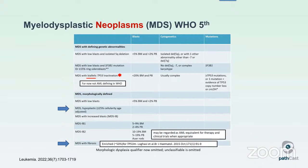I'll start with myelodysplastic syndrome, previously known as myelodysplastic syndrome, now referred to as myelodysplastic neoplasms by the WHO to highlight the neoplastic nature of this disease, but the abbreviation has stayed the same. There is a hierarchical classification for MDS that is largely driven by the presence or absence of genomic alterations. There are two main branches: MDS defined by genetic abnormalities, and in the absence of defining genetic alterations, MDS morphologically defined.